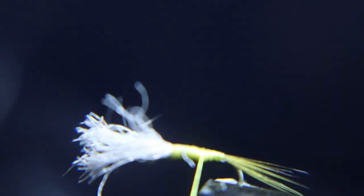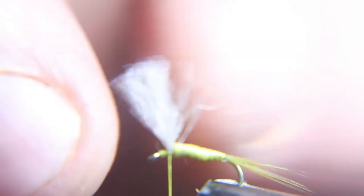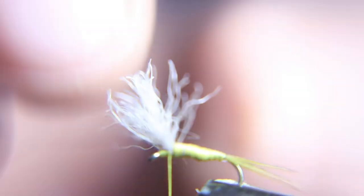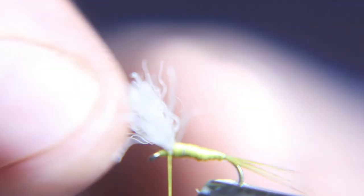I'm going to hit this pretty quick. What you're going to do is pull the wing back, put wraps in front of it, and then do one set of figure eight to split the wing. Then put more thread wraps in front of it to make it stand up, and then finish the fly. But we're not quite done yet.